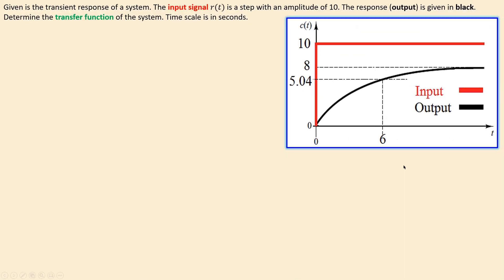What we have is the following situation: a transient response of a system. We don't know yet what it is exactly. We have an input signal R(t), which is a step input with an amplitude of 10 — that's the red line. We have the output, given in black, which is our response. From these two data curves, we would like to determine the transfer function of the system. There's a system — the red line goes in, the black line comes out. The time scale is in seconds. So how do we start?